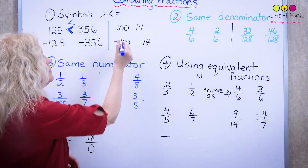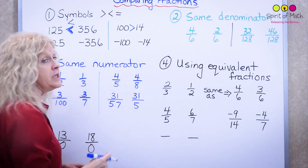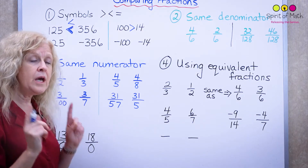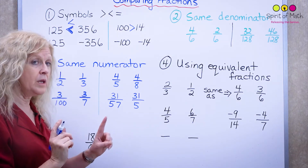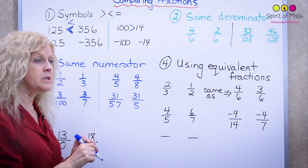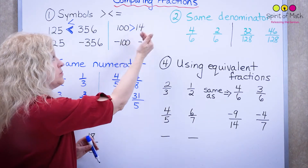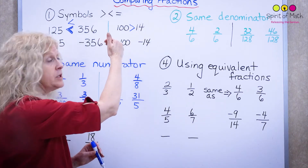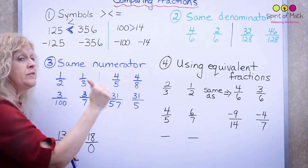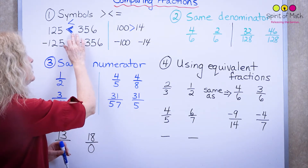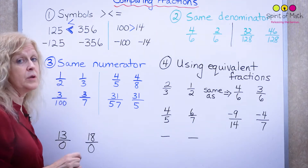Let's try another one: 114. A hundred is larger than 14. Another way to remember: the smallest number is furthest to the left on the number line. 14 is more to the left so it's smaller. 14 is less than 100, so you put the symbol pointing toward 14.